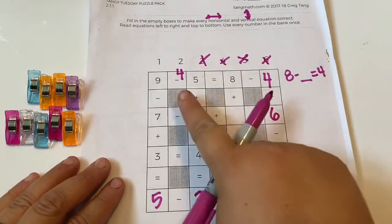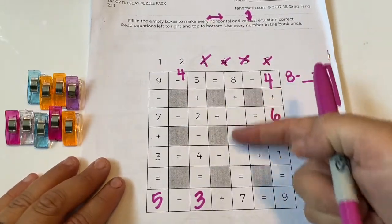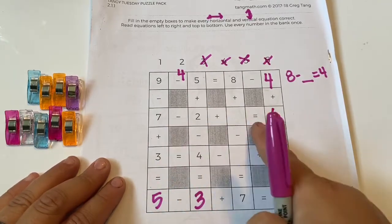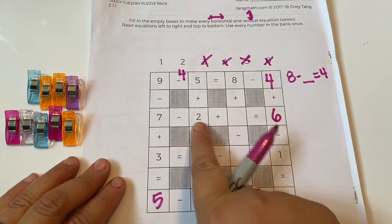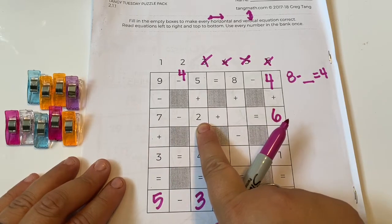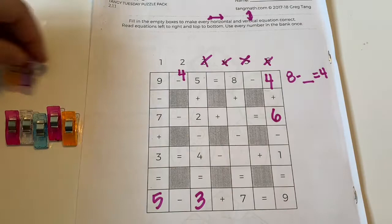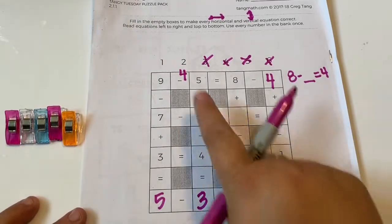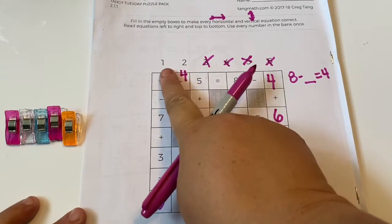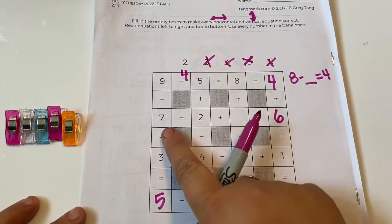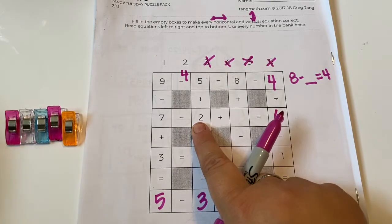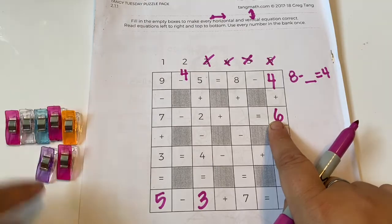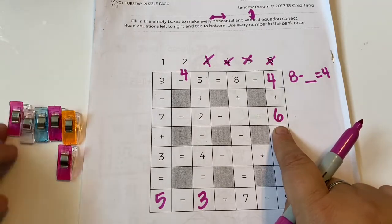So the only numbers left are one and two, and they're gonna go up and down here in those two blanks. But I'm gonna figure them out side to side. So let's try this. Seven minus two. So let's do seven minus two plus either one or two, because those are the numbers we have left, equals six. So seven minus two is five. Plus one is six. If we did plus two it would be seven, and that doesn't work. So this is a plus one.